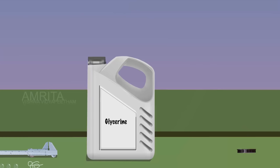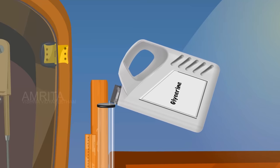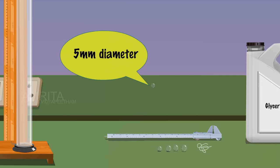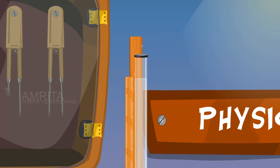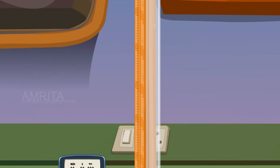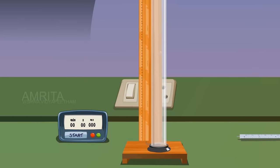Now, fill the glass jar with glycerine. Take a glass bead of diameter 5 mm and drop it gently into the liquid. It falls down in the liquid with accelerated velocity for some time and then moves with a uniform terminal velocity.